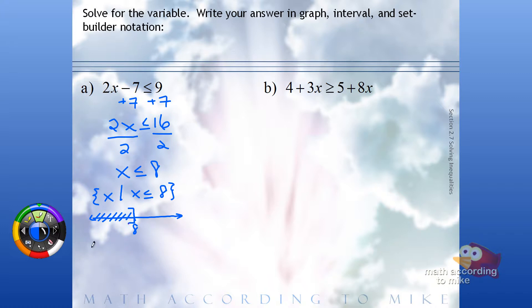And now looking at the interval notation. This goes all the way to the left forever, so negative infinity. Remember, infinity always gets parentheses. And how far right does it go? It goes up to 8, inclusive.